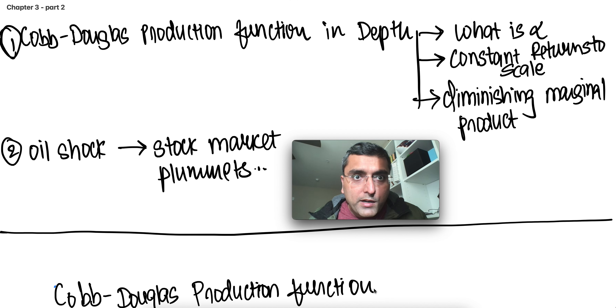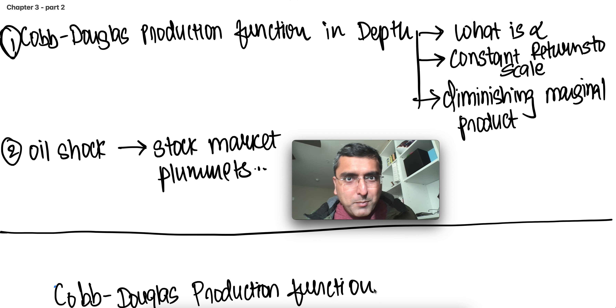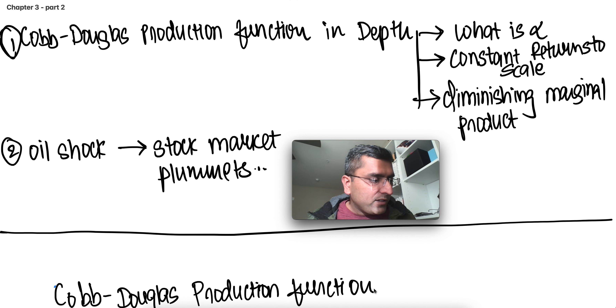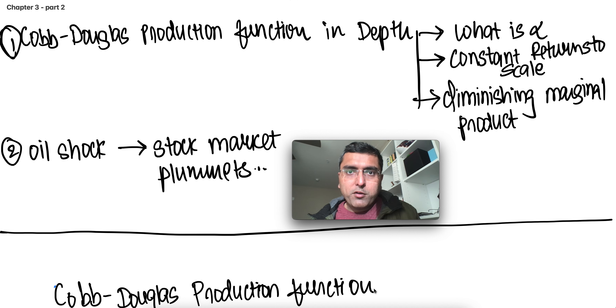Hello, this is part two of chapter three. In this part two, I'm going to go in detail on some of the topics from chapter three: aggregate production and productivity.